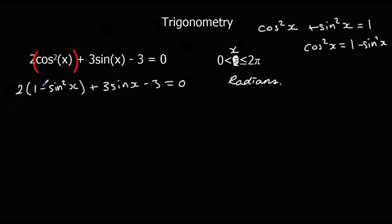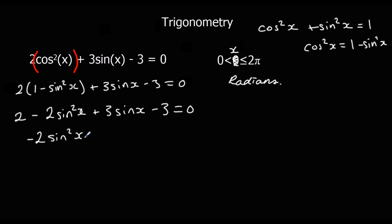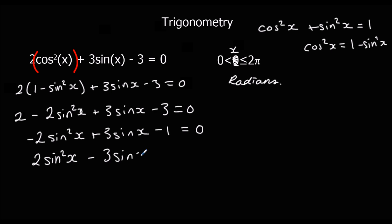Expanding the bracket by multiplying by 2 gives 2 − 2sin²x + 3sinx − 3 = 0. Collecting like terms: −2sin²x + 3sinx − 1 = 0. Since the leading term is negative, multiply everything by −1 to get 2sin²x − 3sinx + 1 = 0.